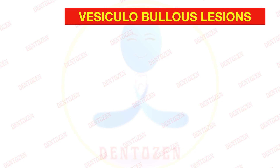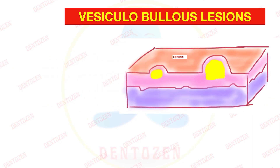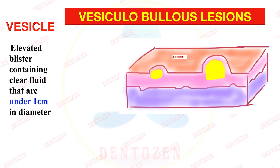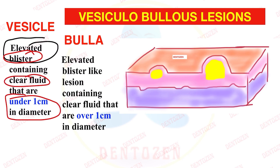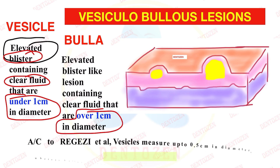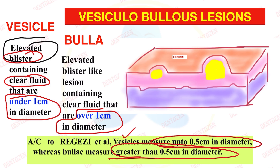Let's first understand what vesiculobullous lesions are. These are elevated blisters filled with clear fluid. Based on their size, they can be vesicles or bullae. If the size is under one centimeter, we call it a vesicle; if it is over one centimeter in diameter, we call it a bulla. According to Reggae, if it is 0.5 cm or less it is a vesicle, and greater than 0.5 cm is a bulla. Essentially, vesicles are small and bullae are large.